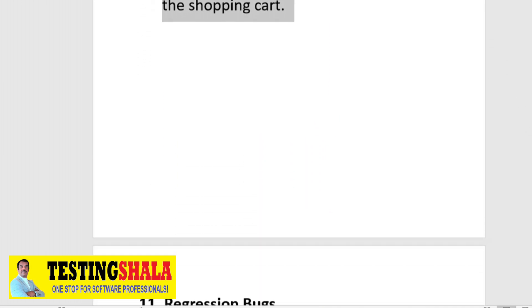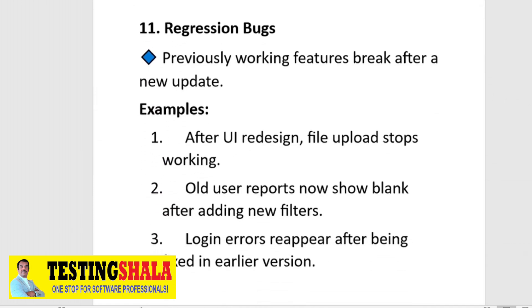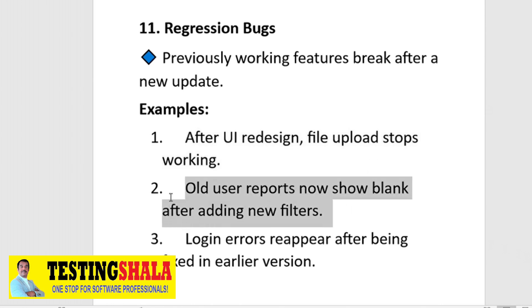The eleventh type is regression bugs. These occur when a previously working feature suddenly breaks after a new update. Examples include: after a UI redesign, file upload stops working; old user reports show blank after adding a new filter; or a login error reappears after being fixed in an earlier version. These should be logged under regression bugs.